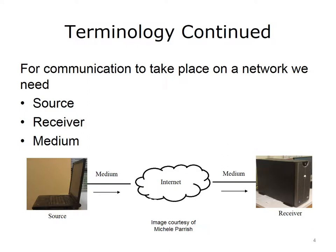For communication to take place on a network, we need a source, a receiver, and a medium to transmit data between the source and the receiver. The source and the receiver can be a desktop computer, server, laptop, printer, router, switch, cell phone, ATM machine, almost anything you can imagine. The medium or media is the wired or wireless method that is used to connect the source and receiver to each other, and that carries the data from the endpoints.